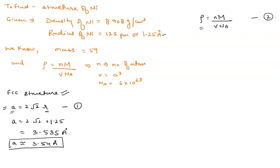So here I get one value from this equation. Now solving this density equation, so we have the density 8.908 is equal to, for FCC, N is equal to 4.